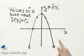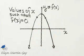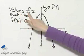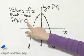Here is our graph of our function f of x. Notice it is the graph of a function. It passes the vertical line test. We want to find the values of x such that f of x is 0.